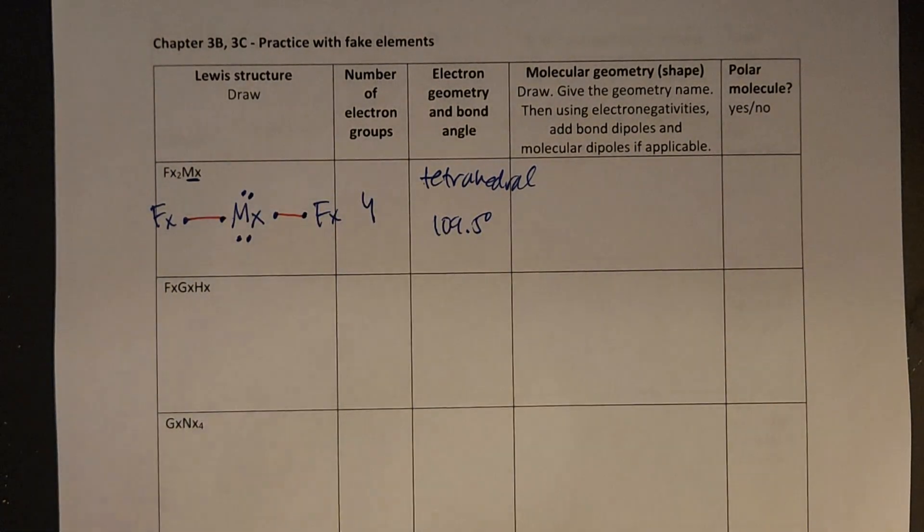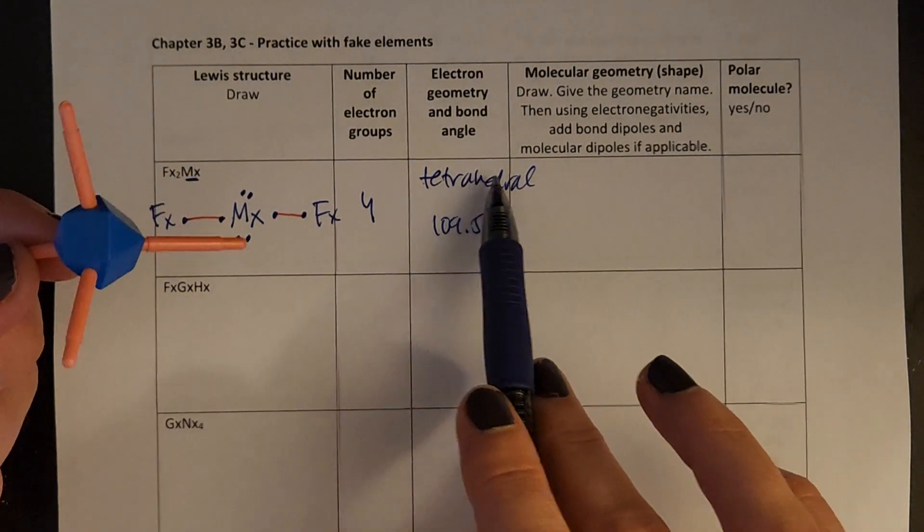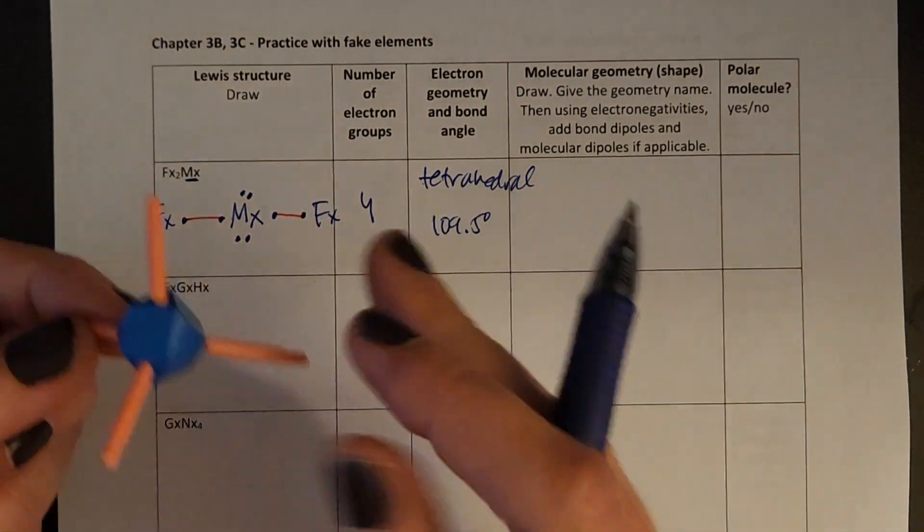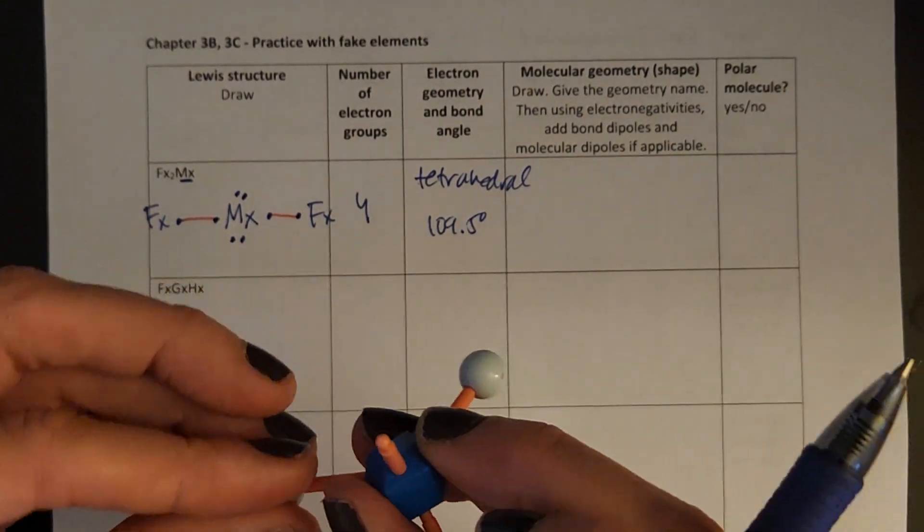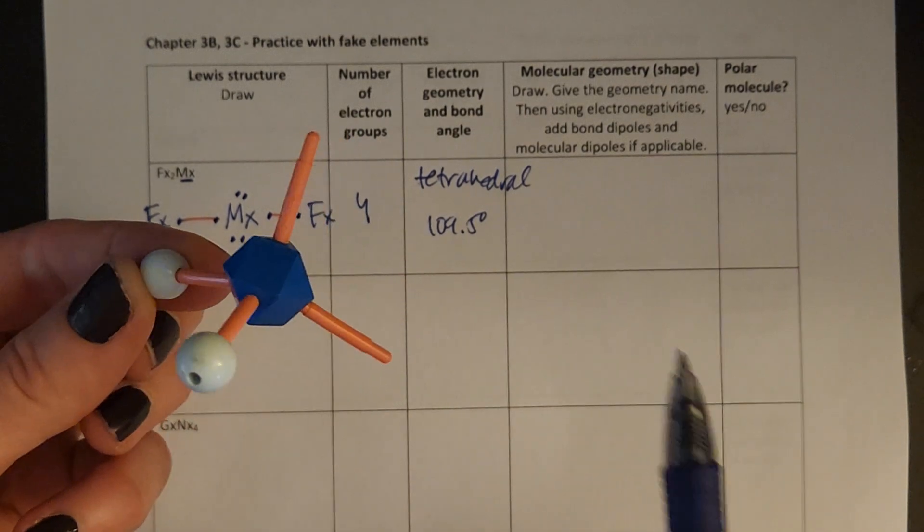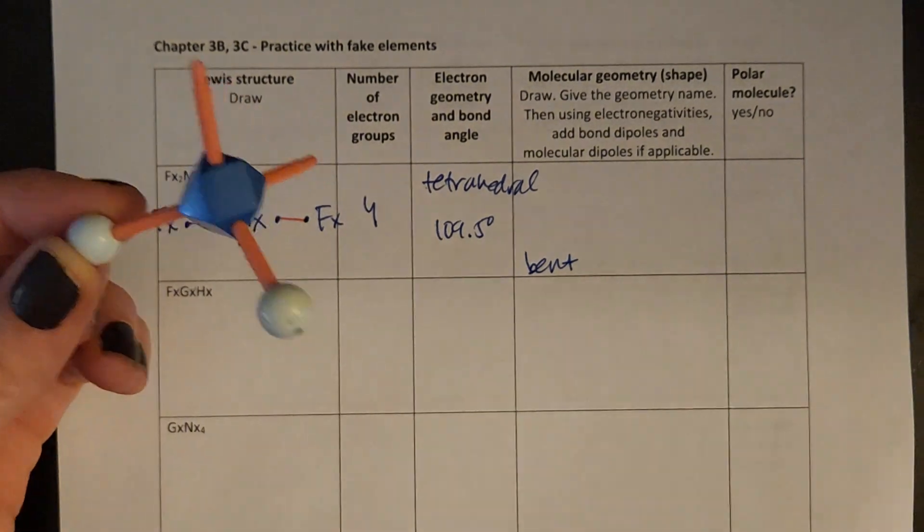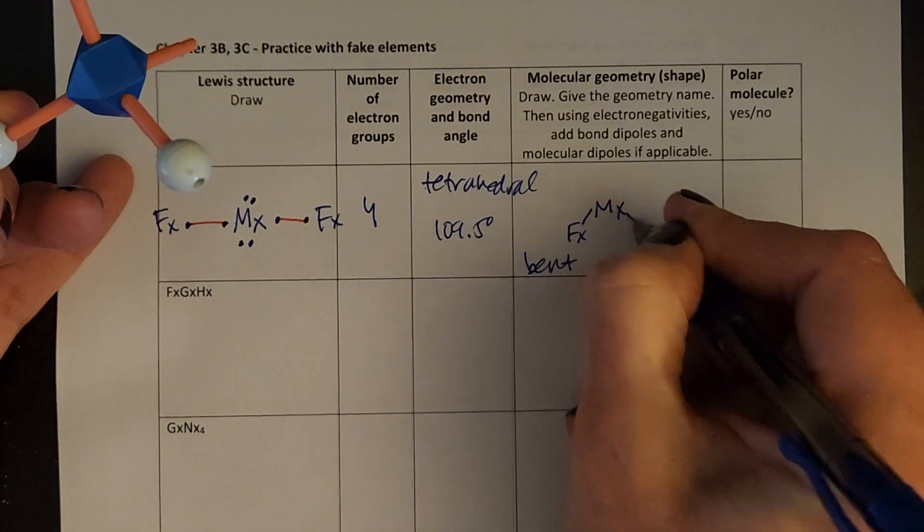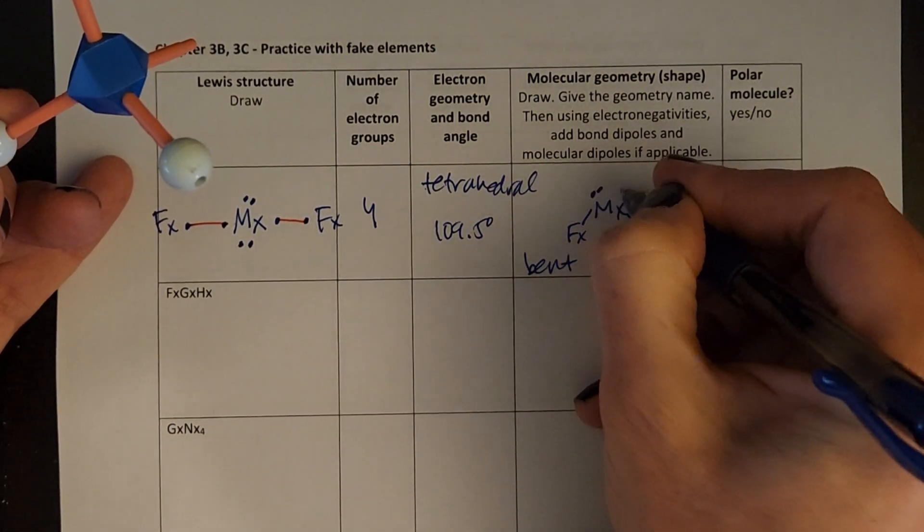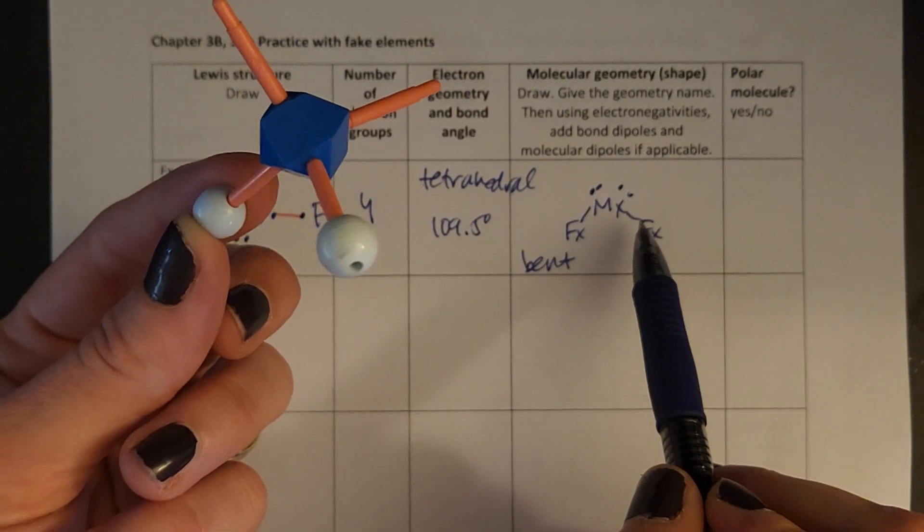Now I want to think about how those four electron groups are going to orient around a center. So they're going to form a little tetrahedral electron geometry. And then the molecular geometry is going to have two atoms and two lone pairs, or two ghosts. So I've got two atoms connected and then two lone pairs. So that's going to lead me to a molecular geometry that's bent. So if I redraw this, mx is still in the middle, and now I have it bent down to this fx, and I could draw the two lone pairs up here. So I'm looking at kind of this structure drawn here.